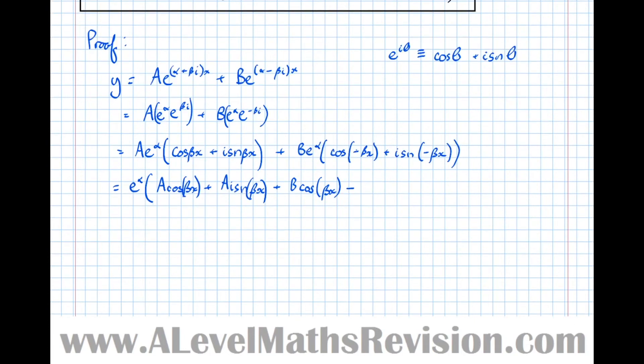Then sin(-βx) is -sin(βx) again by symmetry of the sin graph. So we've got Bi sin(βx). So now let's gather up all the cos(βx)'s and the sin(βx)'s together. So that becomes e^(αx). So we've got cos(βx) times (A + B). Then we've got i sin(βx) (A - B).